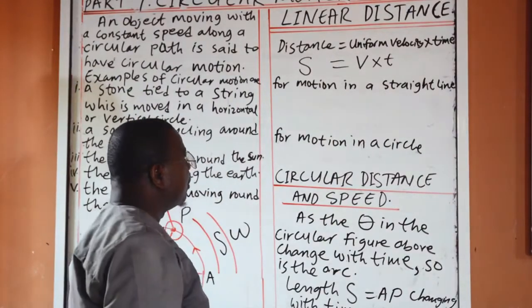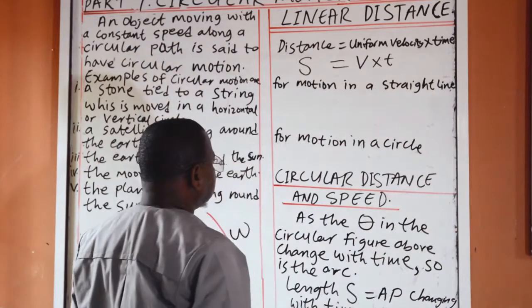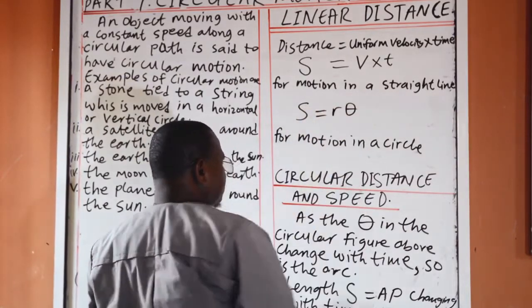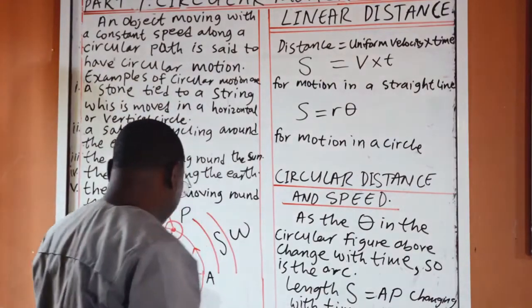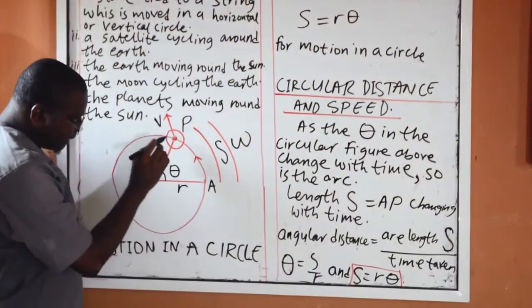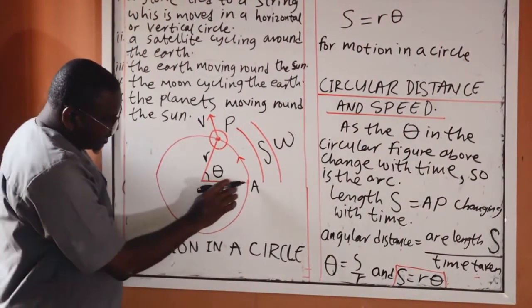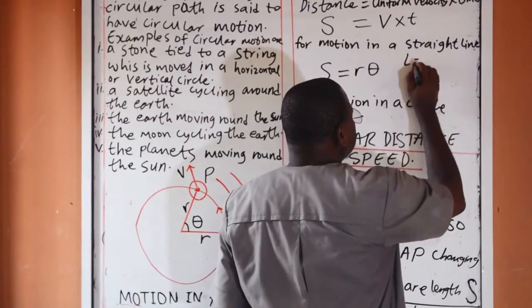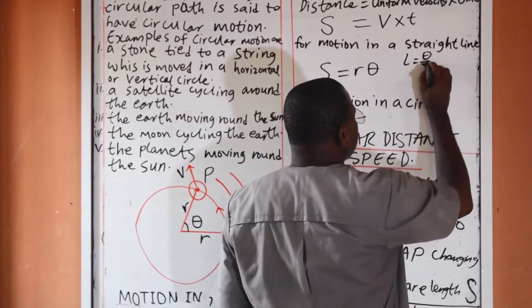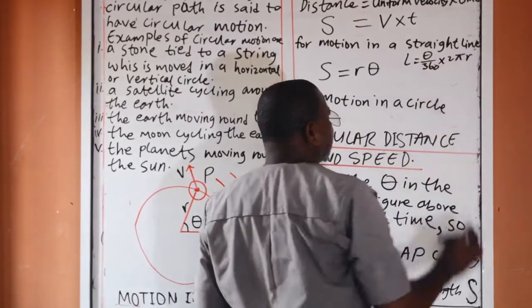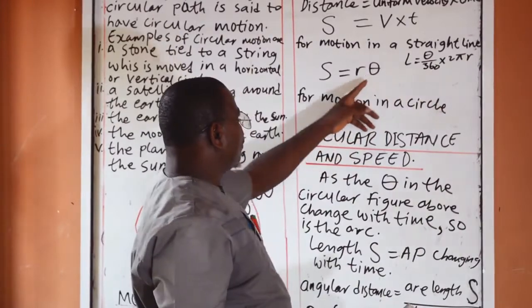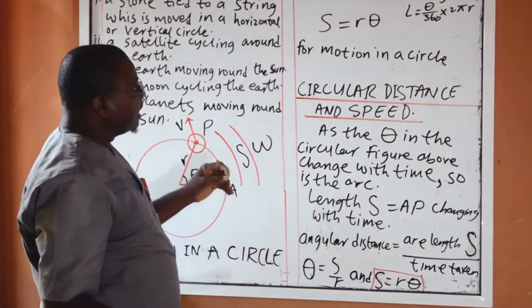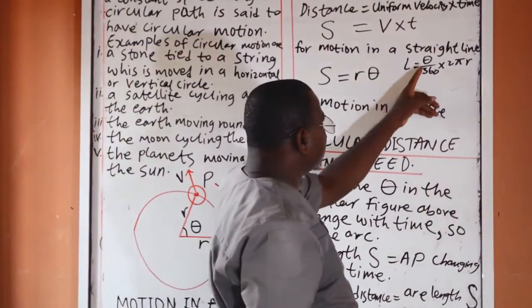In the case of angular distance, s is equal to r theta. In mathematics, this is an arc. An arc is part of a circle. And when you want to find the length of an arc, the length of an arc is equal to theta over 360 times 2 pi r. So, from this formula, we derive the length of this arc AP, which is equal to s. That is the distance along the arc.